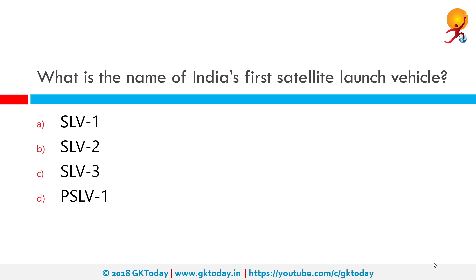What is the name of India's first satellite launch vehicle? India's first satellite launch vehicle was SLV3. The first attempt to launch SLV3 was in 1979, carrying a 35 kg Rohini satellite, but it failed. However, in the second flight in 1980, the Rohini satellite was successfully placed in orbit. So the correct answer is option C: SLV3.